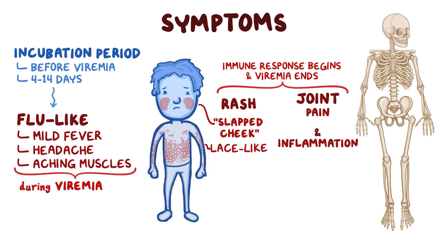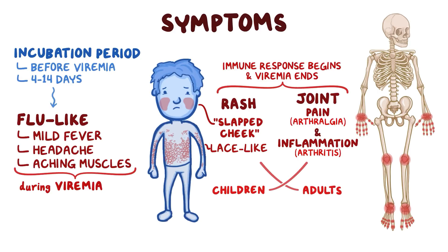Joint pain and inflammation, or arthralgia and arthritis, linked to parvovirus B19 infection usually affects the small joints of the hands, wrists, feet, and knees, and are often symmetrical, meaning that the same joints on both sides of the body will be affected. Children tend to get the rash, whereas adults are more likely to develop joint pain, but it's not exclusive to either group.